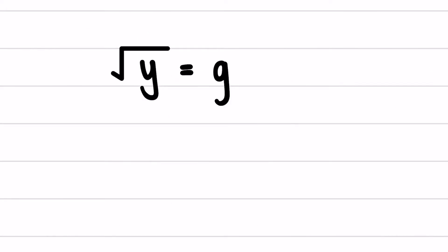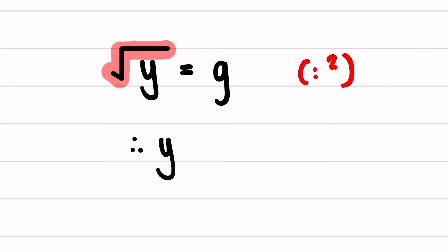If I have the square root of y equal to g, I want to get rid of the square root. In order to get rid of the square root, I am going to square both sides of the equation. The square root of y squared becomes just y, equal to g squared.